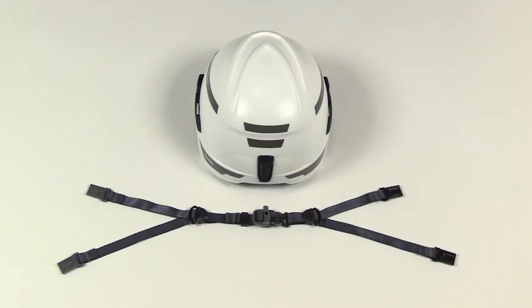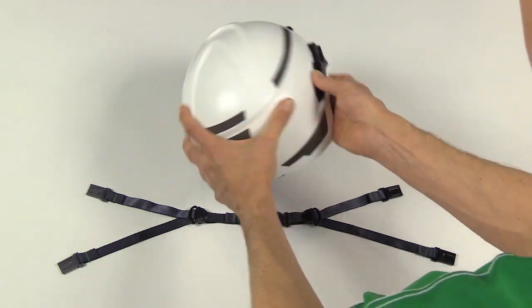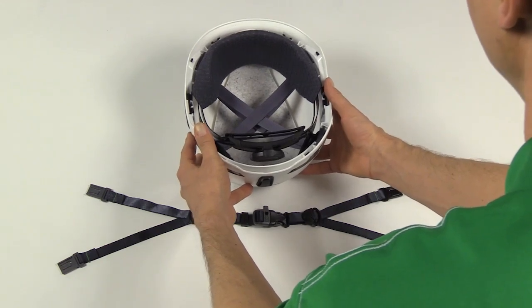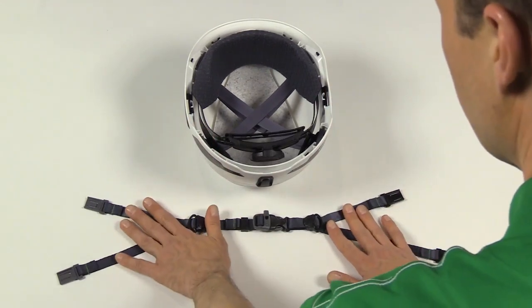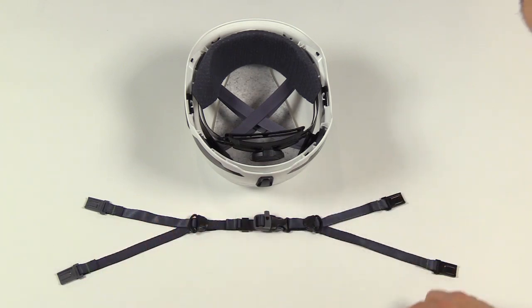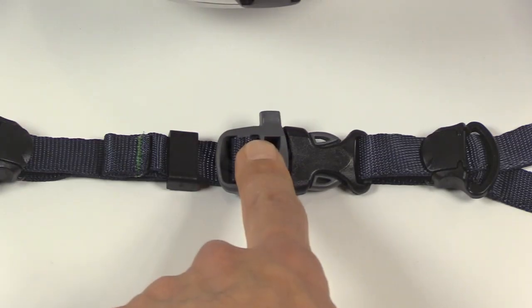This is an installation video for the V-Guard H1 safety helmet EN397 chin strap. Begin with the safety helmet facing away from you, upside down on the table, and ensure that the chin strap is flat, not twisted, and the whistle buckle is on the left side facing towards the helmet.